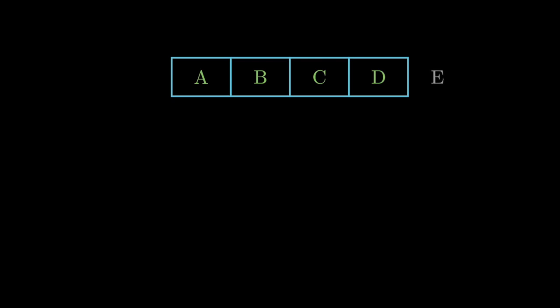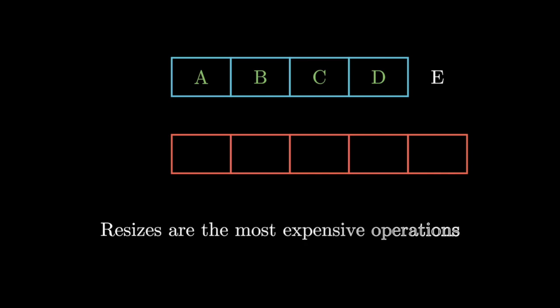What's the core issue with the schemes that we have looked at so far? We know that the operation that's taking the most effort is resizing, so a really good scheme is going to try to limit the number of resizes.